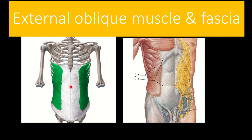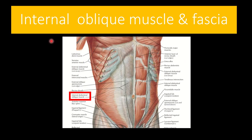The external oblique muscle and its fascia form one muscle layer. We can see in this picture the external oblique muscle arises here, runs to the middle, and finally converts into the fibrous part called the external oblique fascia. The next muscle layer is the internal oblique muscle and fascia.